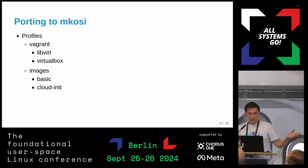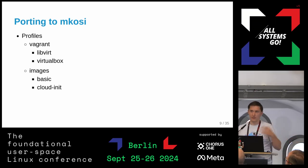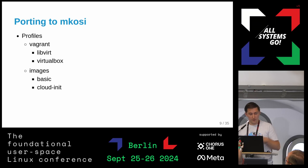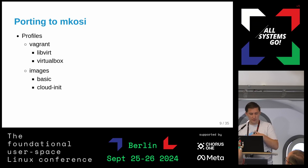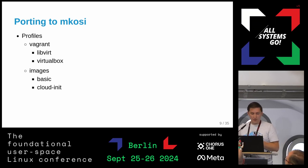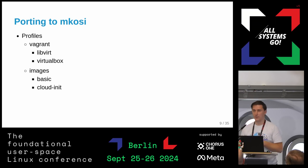Another great feature of MakeOSI is profiles. I have a profiles directory with a LibVirt profile and a VirtualBox profile, because they're almost the same thing except for a few packages — that's where profiles come in handy. The same goes for the cloud image and the QEMU image: they're almost the same except the cloud init image is resized and shrunk to a smaller size, while the basic image is a 40 gigabyte image.